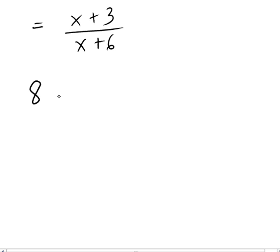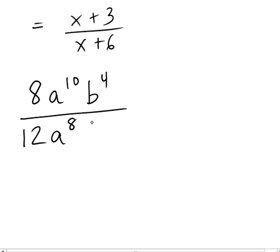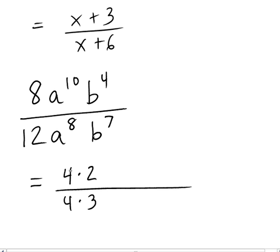Let's suppose I had to reduce 8a to the 10th, b to the 4th, over 12a to the 8th, b to the 7th. Now, you can go right ahead and start crossing things out here if you do it properly. But I'm going to show you the algebra behind it. And what I'm going to do is factor the 8 into 4 times 2 and the 12 into 4 times 3. So that I can see these common factors of 4 here. Now, the 8 to the 10th and the 8 to the 8th, you probably normally handle those by subtracting the exponents. 10 minus 8 is 2. And you get an a squared in the numerator. And that's correct. I wanted to avoid doing that, though, and show you the method we've learned above.